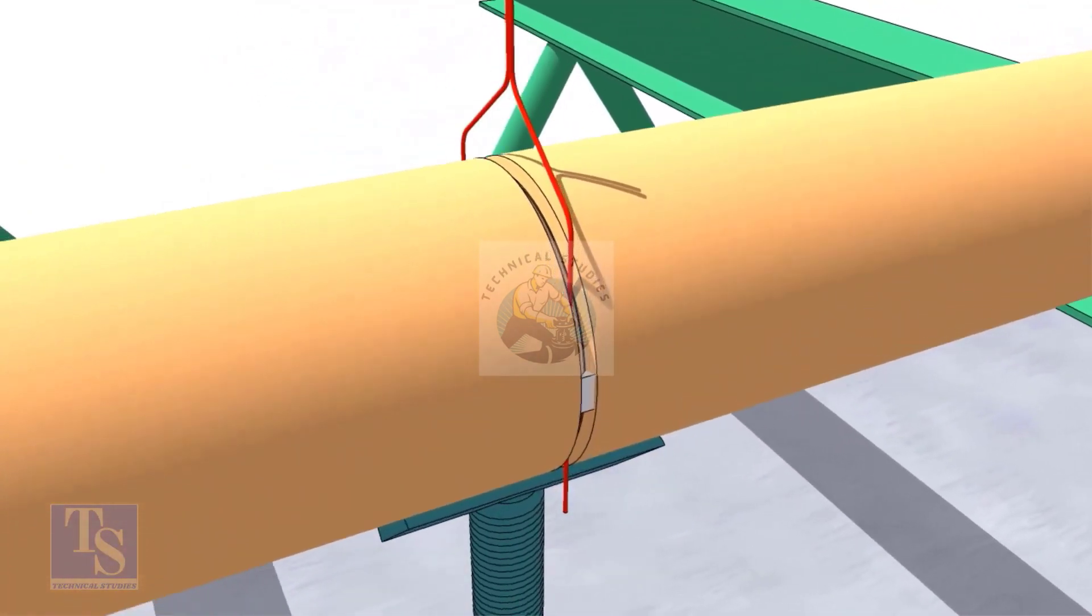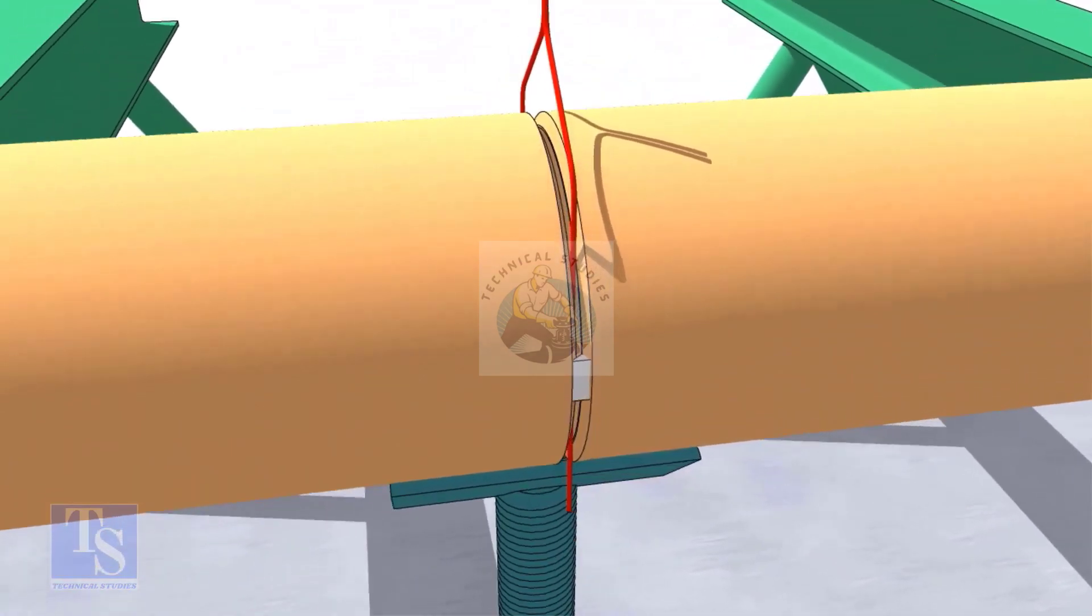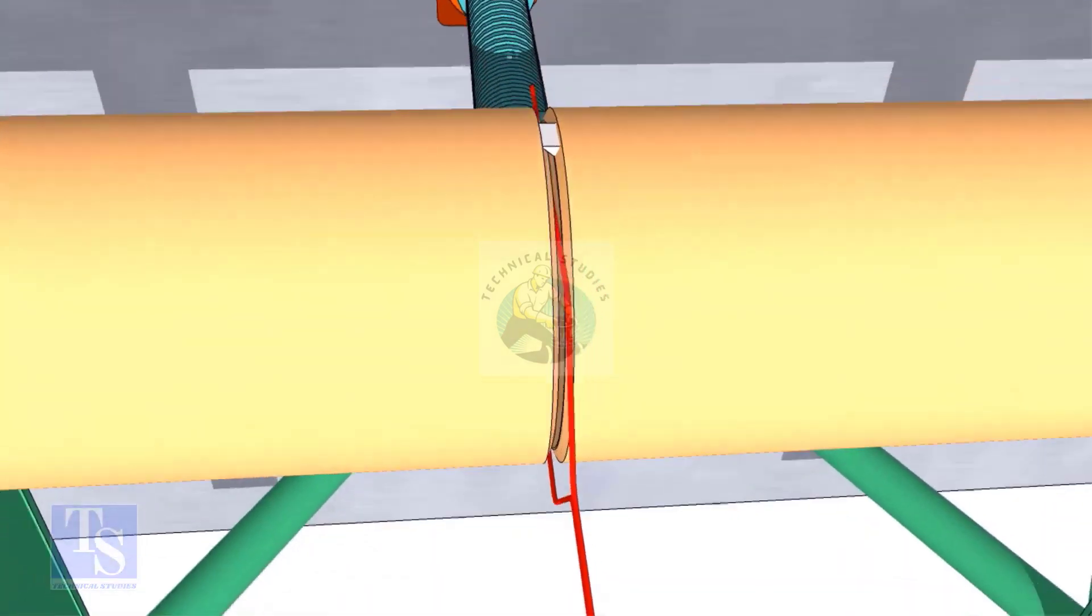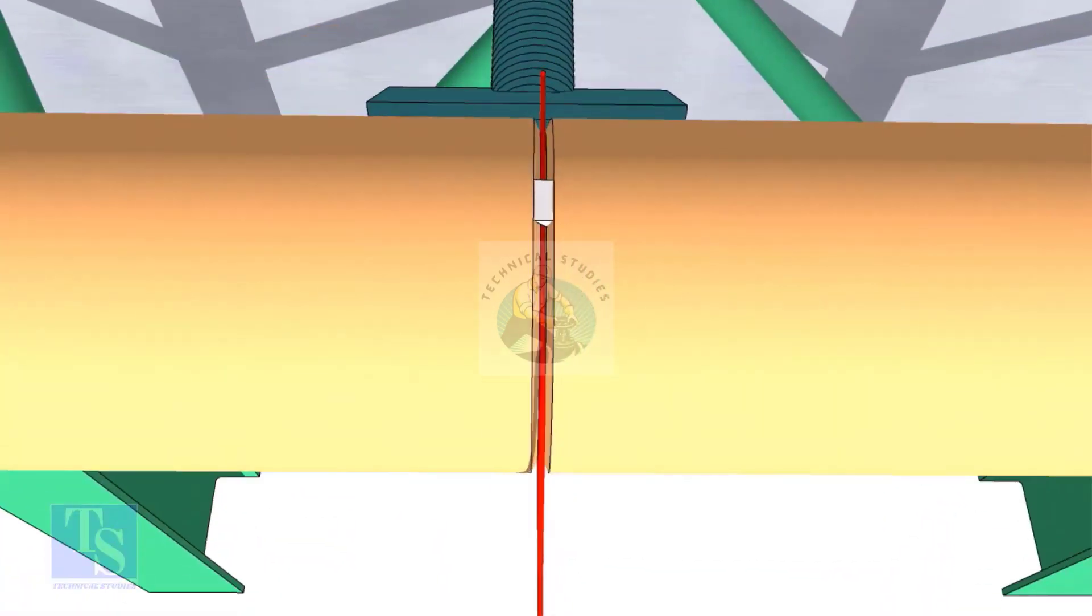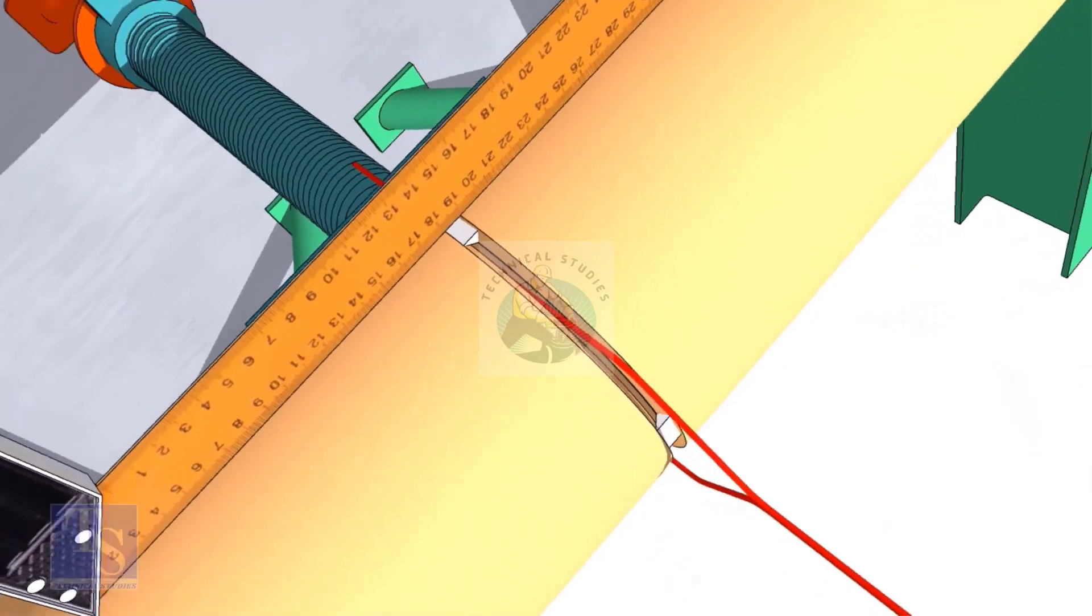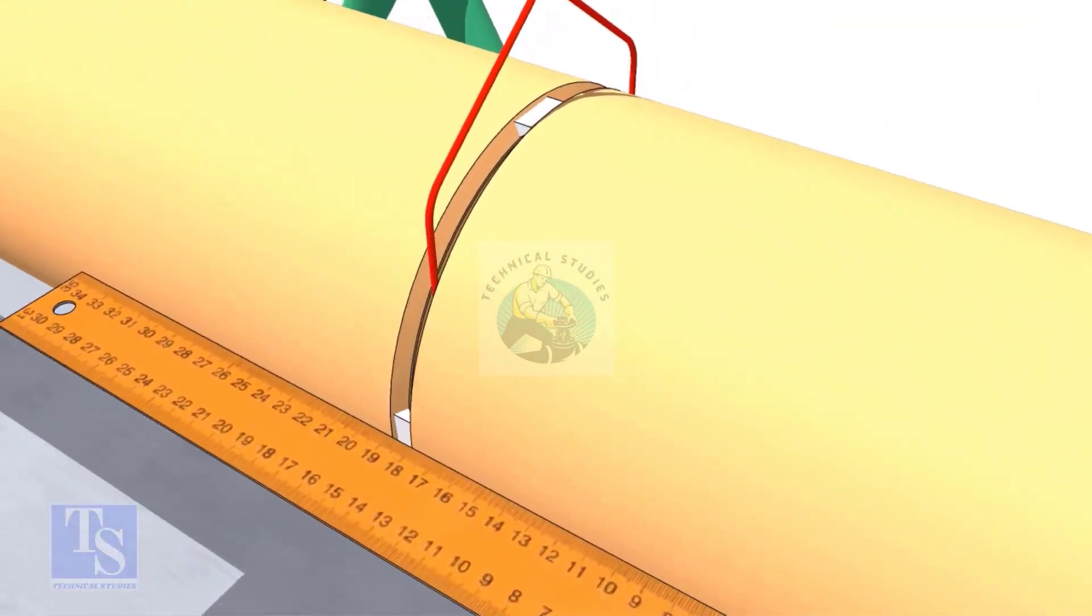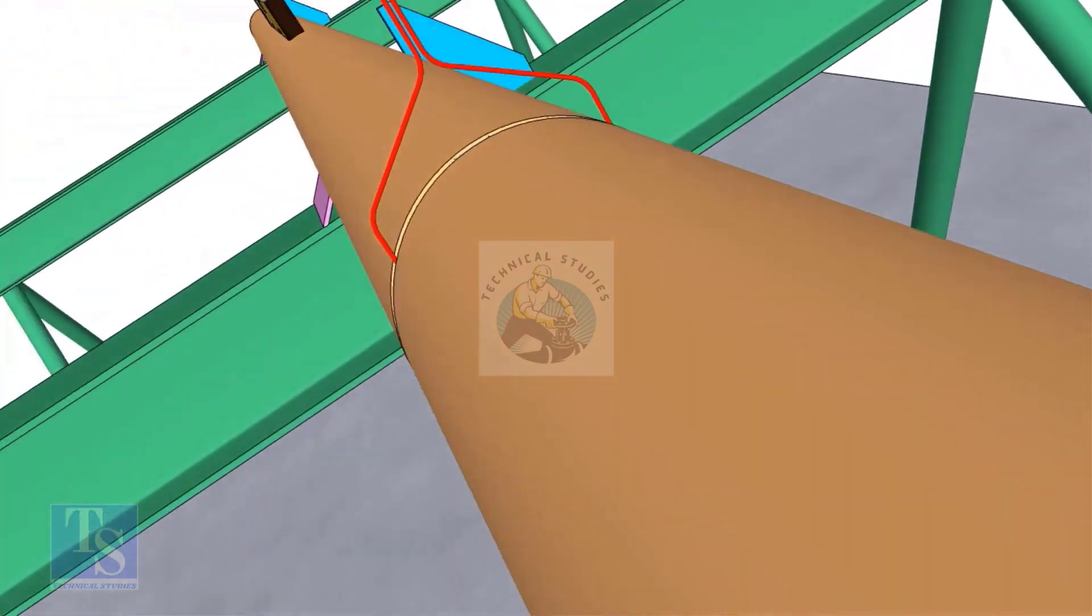Tack weld on both sides of the pipe, then the top and bottom of the joint. Don't forget to cross-check the overlap.